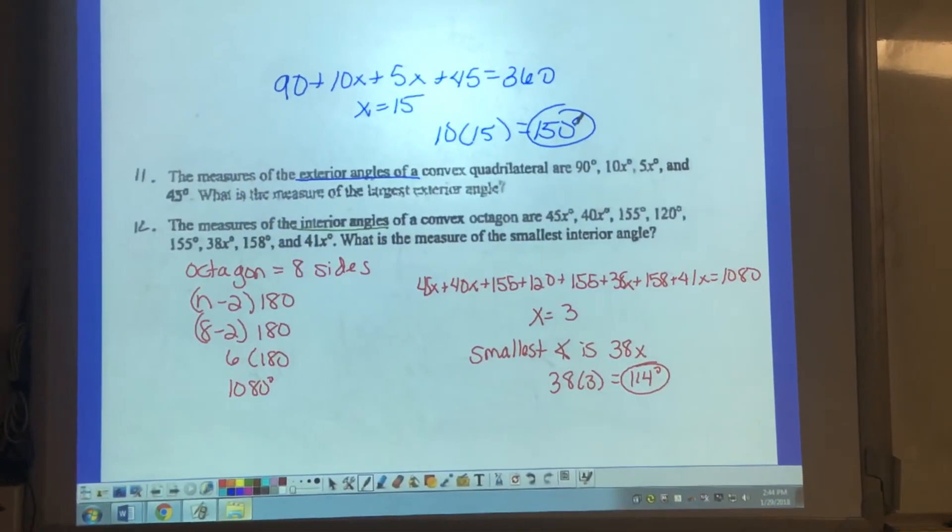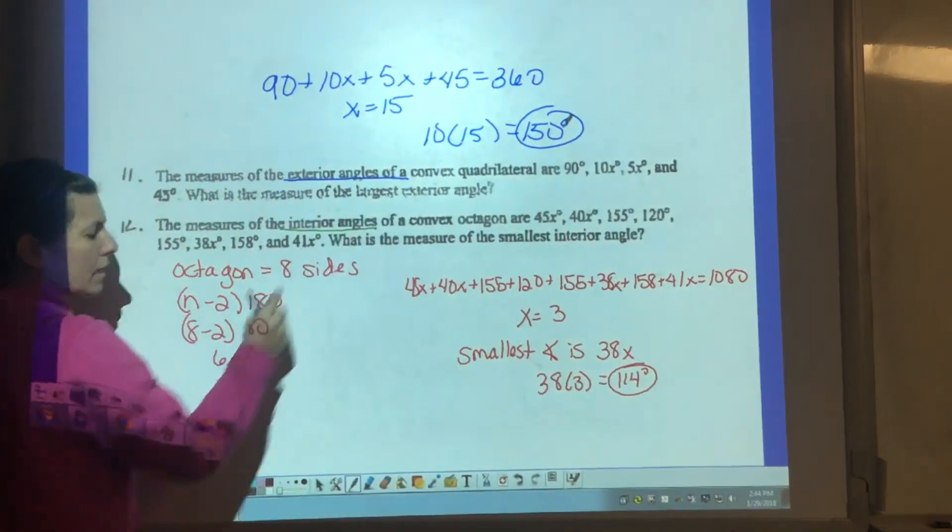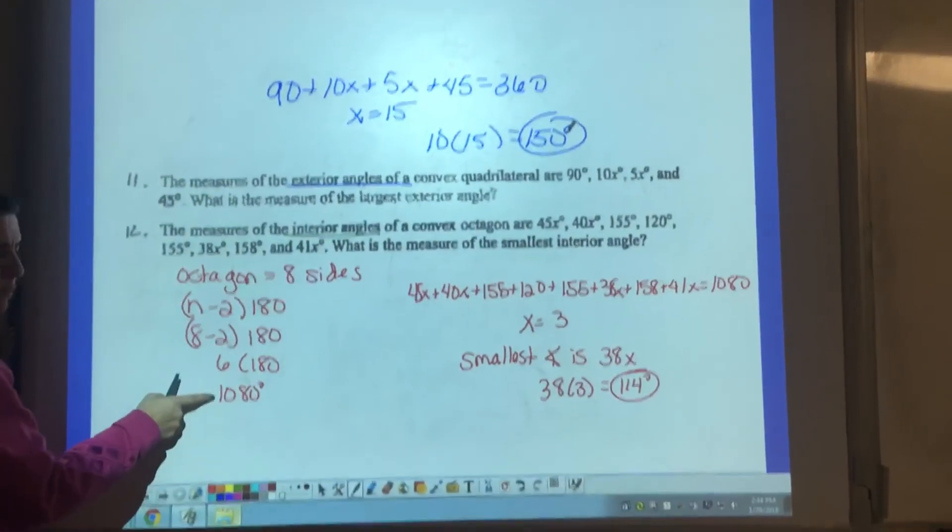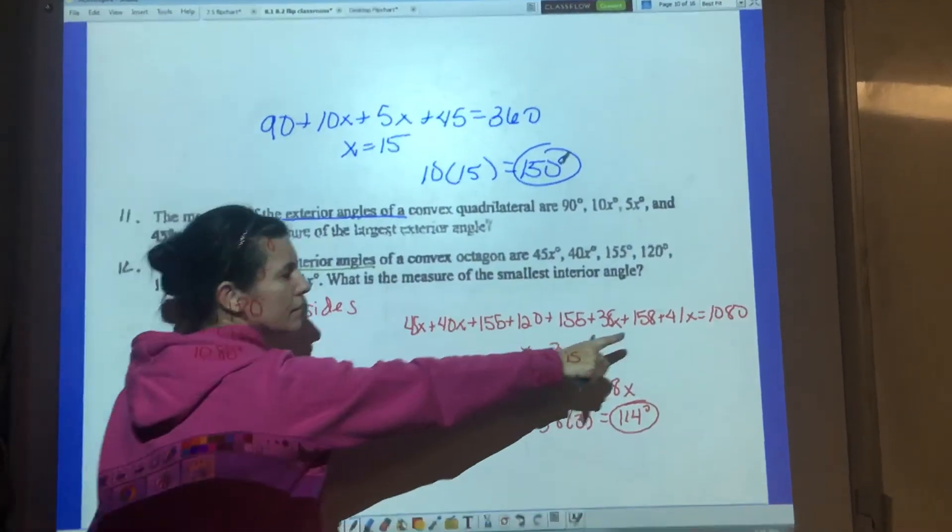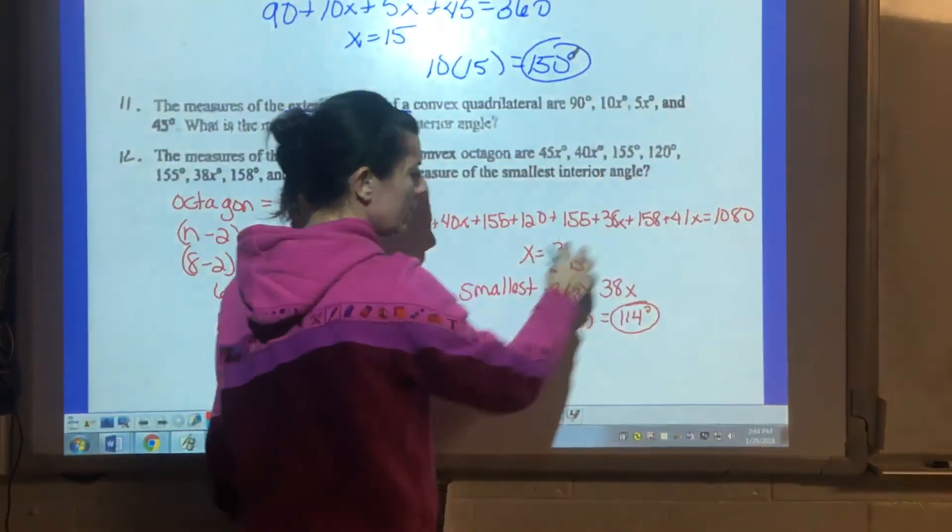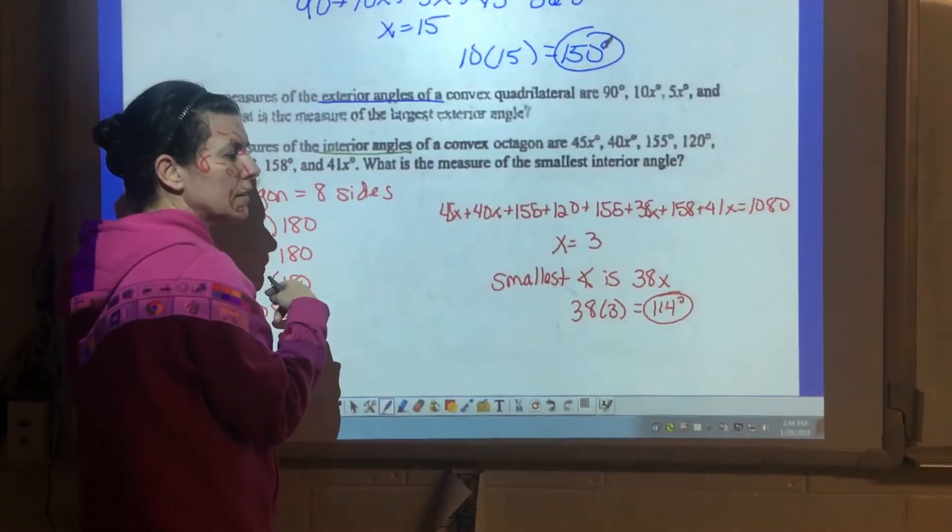Very similar for number 12. We're working backwards to figure out, you know, they're telling us that it's an octagon. We know an octagon has a sum of 1080 using that formula. So I can add up all of these angle measurements and set them equal to 1080. We figure out x is 3.